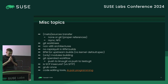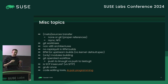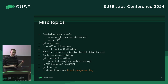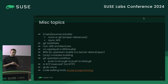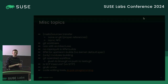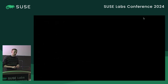An aside on Git worktrees: it's a useful feature not everyone knows about. You can check out multiple branches into different directories without cloning the whole repository, since the object database is shared. 'git help worktree' is the man page for it.